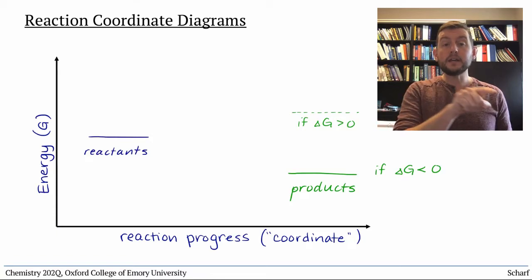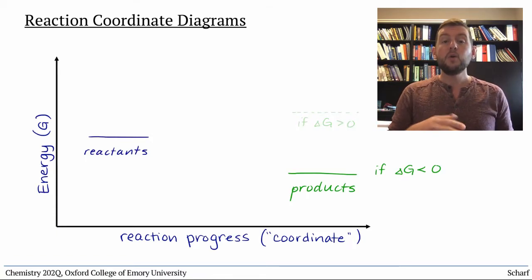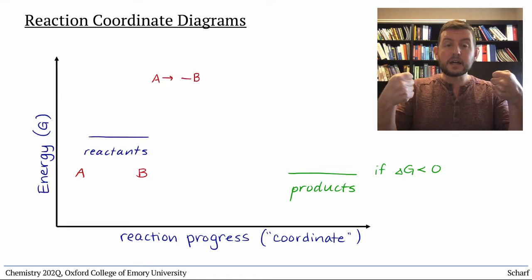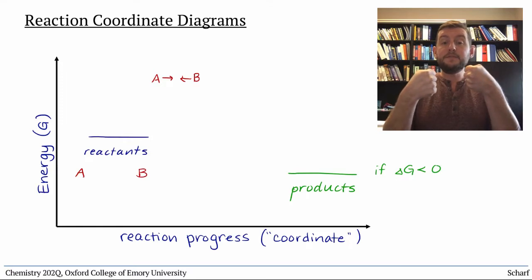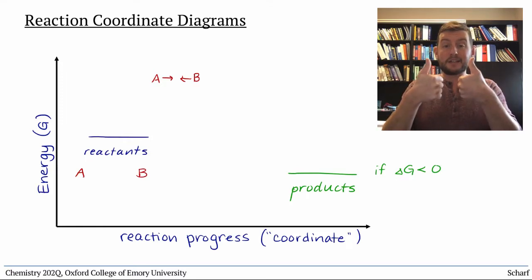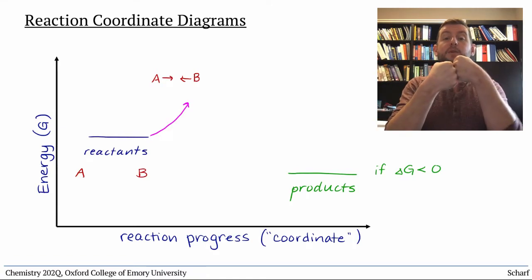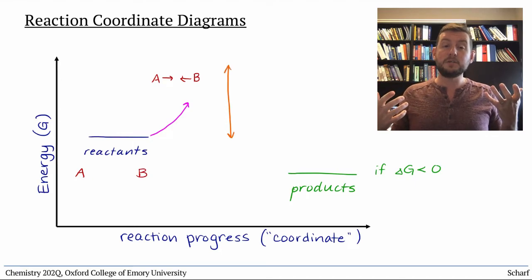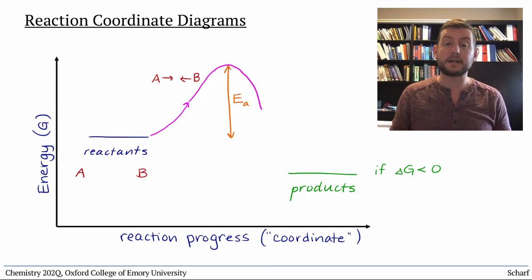In between reactants and products, we show the energies of the molecules as their collision occurs. As they get closer and closer, the repulsive forces between their electrons cause the energy to increase. If they collide with enough kinetic energy that is more than the activation energy barrier, then they proceed toward products.